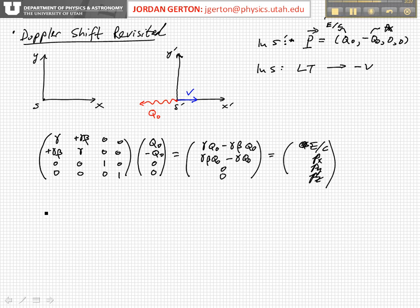And so what we see is that E over C, just from the first equation, is equal to gamma times Q naught times one minus beta, which is equal to Q naught times one minus beta squared.